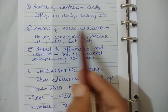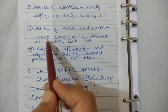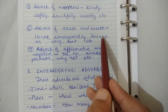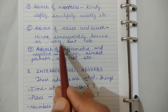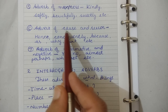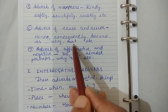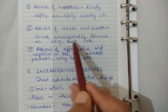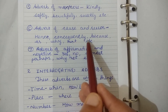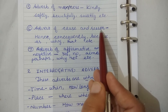Adverb of cause and reason. Examples: hence, consequently, because, as, why. Why is a cautionary word here, but it is used in adverb of cause and reason also. That is one sort of connector used for reason. These all are examples of adverb of cause and reason.